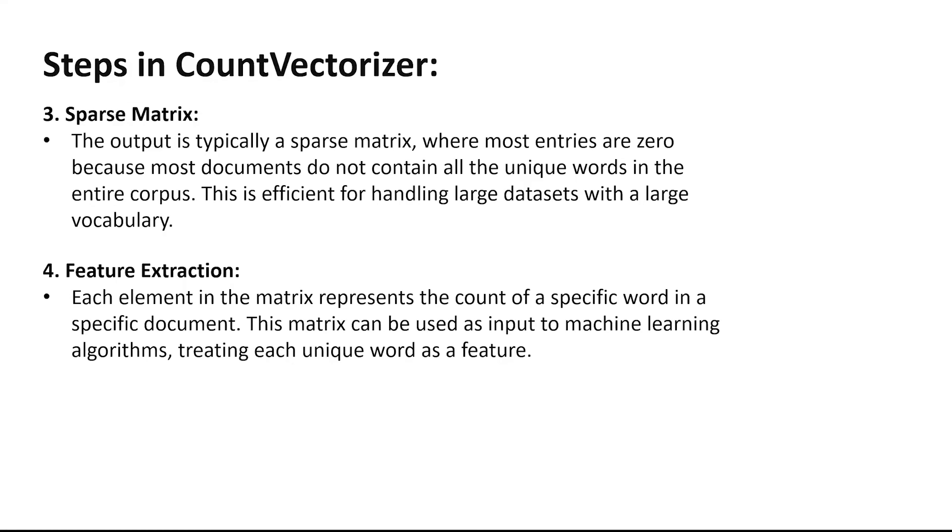Finally, we can do feature extraction. Each element in the matrix, each cell in the matrix represents the count of a specific word in a specific document. So a particular word might be used more frequently in a specific feedback compared to another feedback. That's quite likely. When people are very expressive about a great experience or maybe the other extreme where they're not very happy, they may repeatedly use certain kinds of words which will appear more often compared to a normal scenario. So you'll be able to differentiate between how important a word is to a particular document or a feedback. And eventually, we're going to use this matrix as an input to the machine learning algorithms where each word is treated like a feature or a column in the data. Next, we'll be talking about the TF-IDF vectorizer.